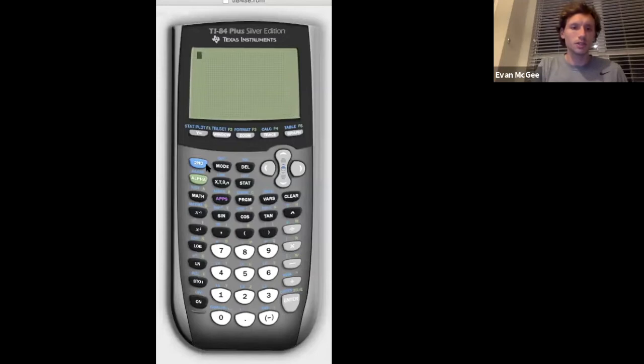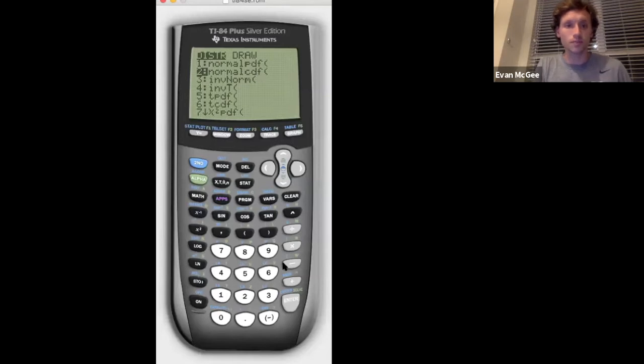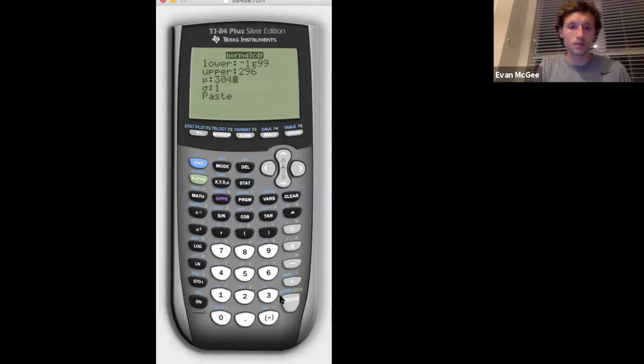Let me show you how to find that in your calculator. On your calculator, you're going to hit second, then vars will take you to distributions. We want the one that says normal CDF, not PDF. C is for cumulative, which this is a range. My lower bound, I want as negative infinity. If it doesn't have that, you can just hit negative and then a bunch of nines. Then our upper bound is 296. The mean is 304, standard deviation is 8. We'll calculate.